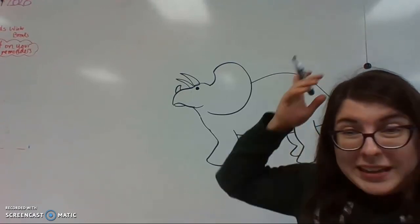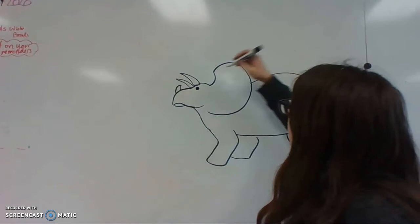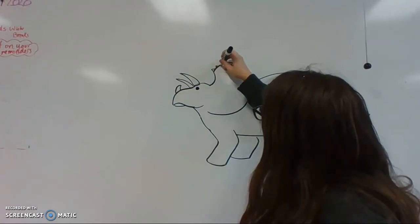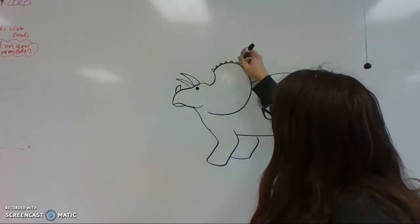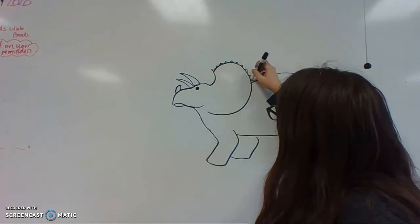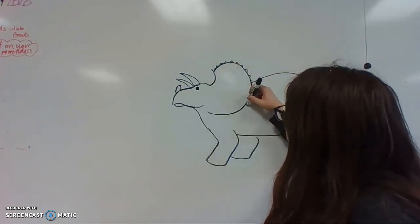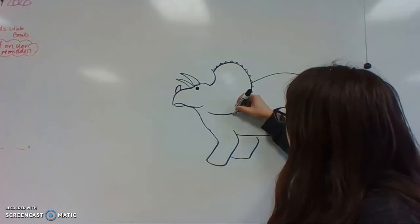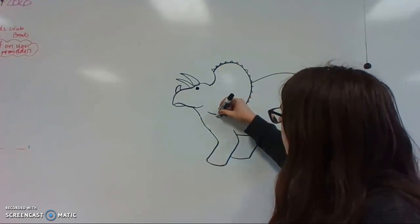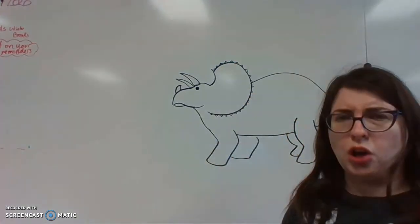Good. And then we want little spikes on the edges of the frill. Just itty bitty little triangles all the way around. Oh, that looks so cute.